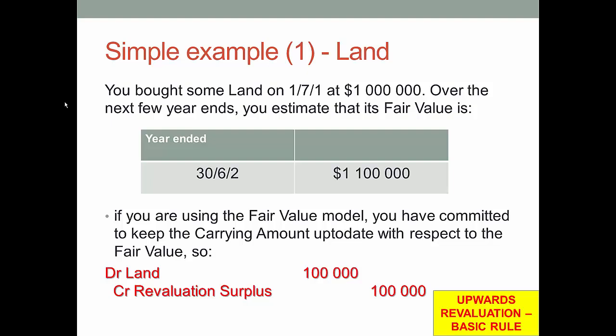The asset I'm going to be working with here is land - I'm trying to avoid complicating this through depreciation, and land of course doesn't depreciate. So you bought some land on the 1st of July of Year 1 at $1,000,000. Over the next few year ends you have a bunch of information about what the fair values are. At the year end dated 30th of June Year 2, the fair value is $1.1 million. So if you're using the fair value model, you're effectively committing to keeping the carrying amount up to date. You've got to bring it up to $1.1 million - so you've got to revalue the land up by $100,000.